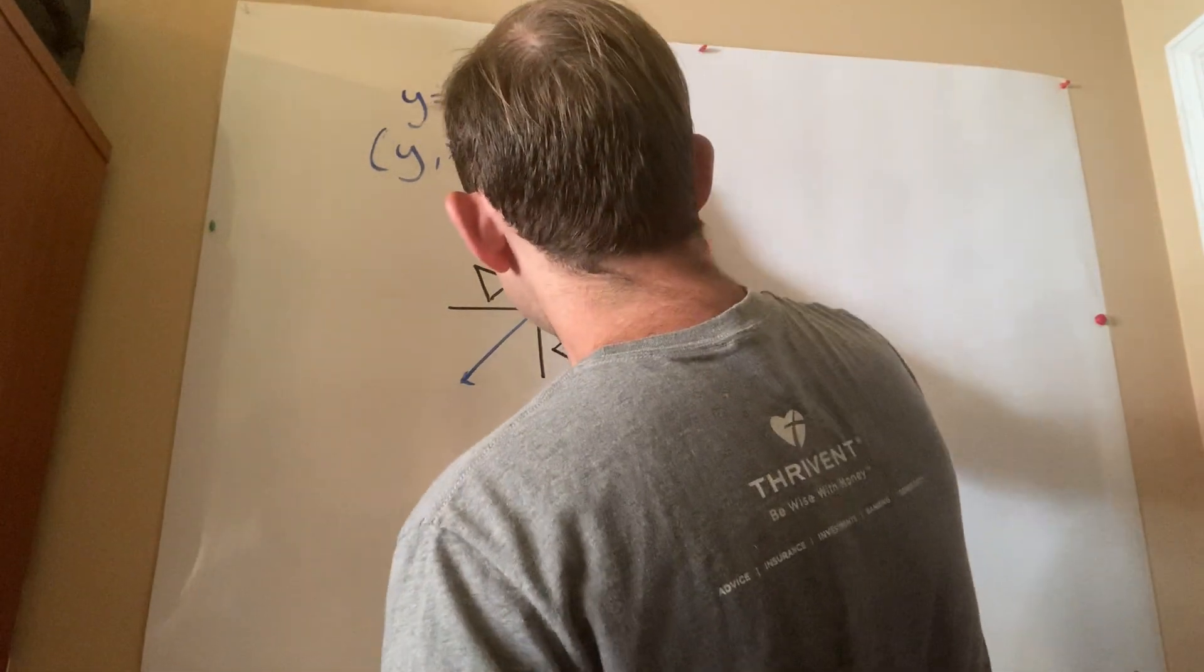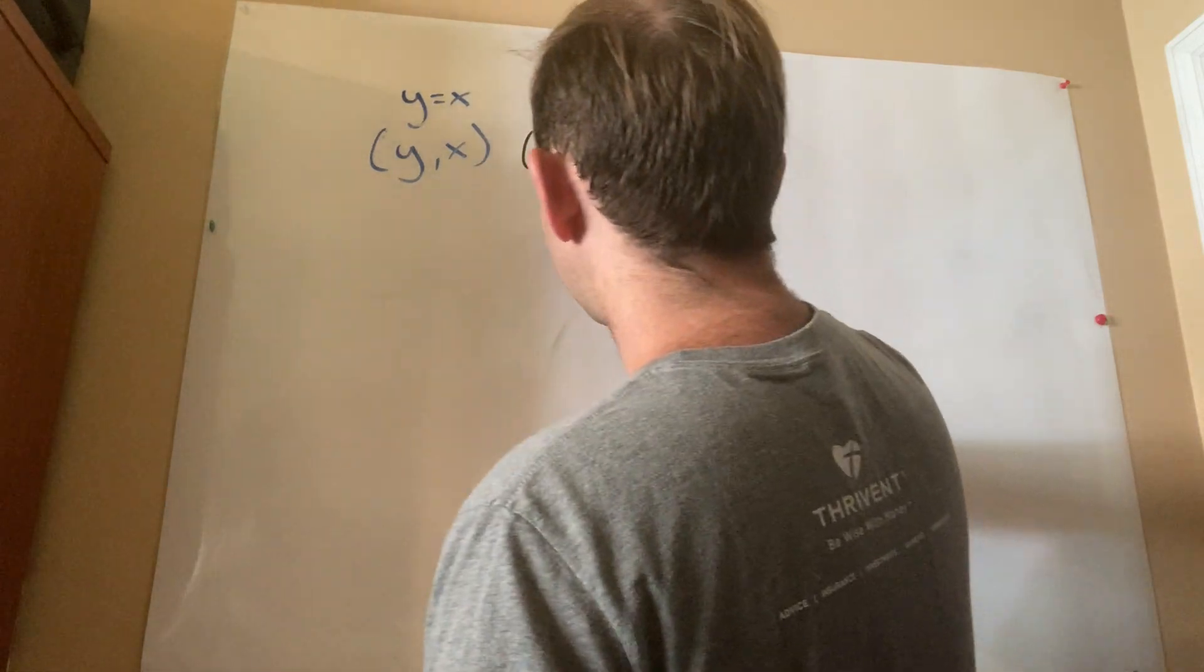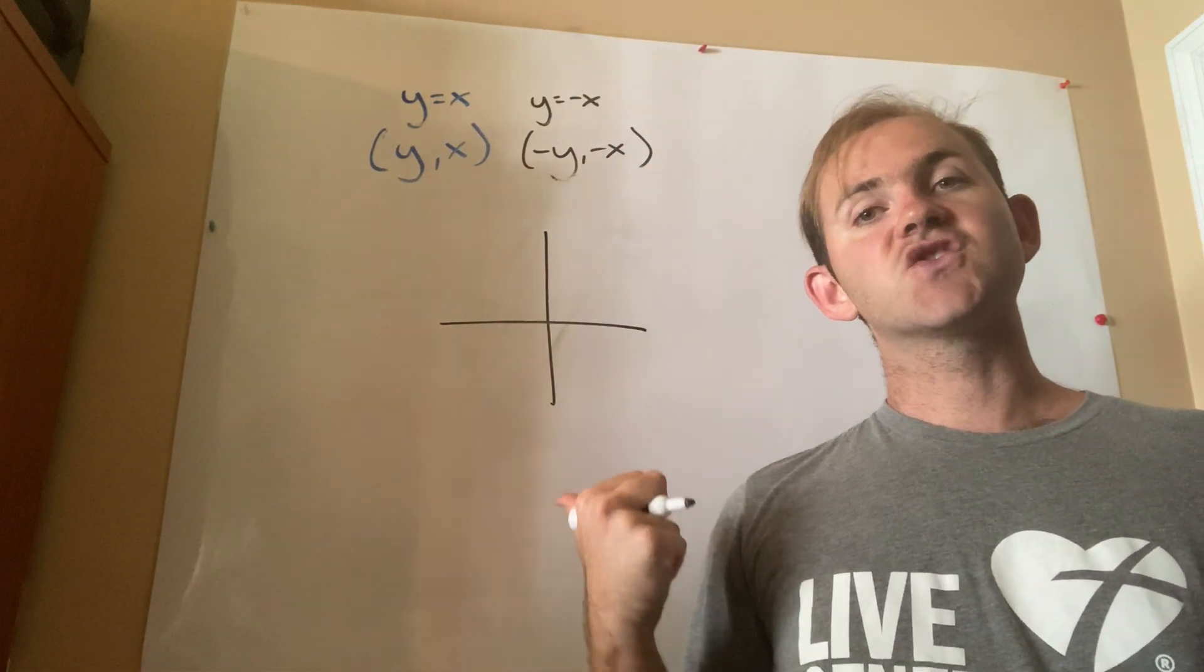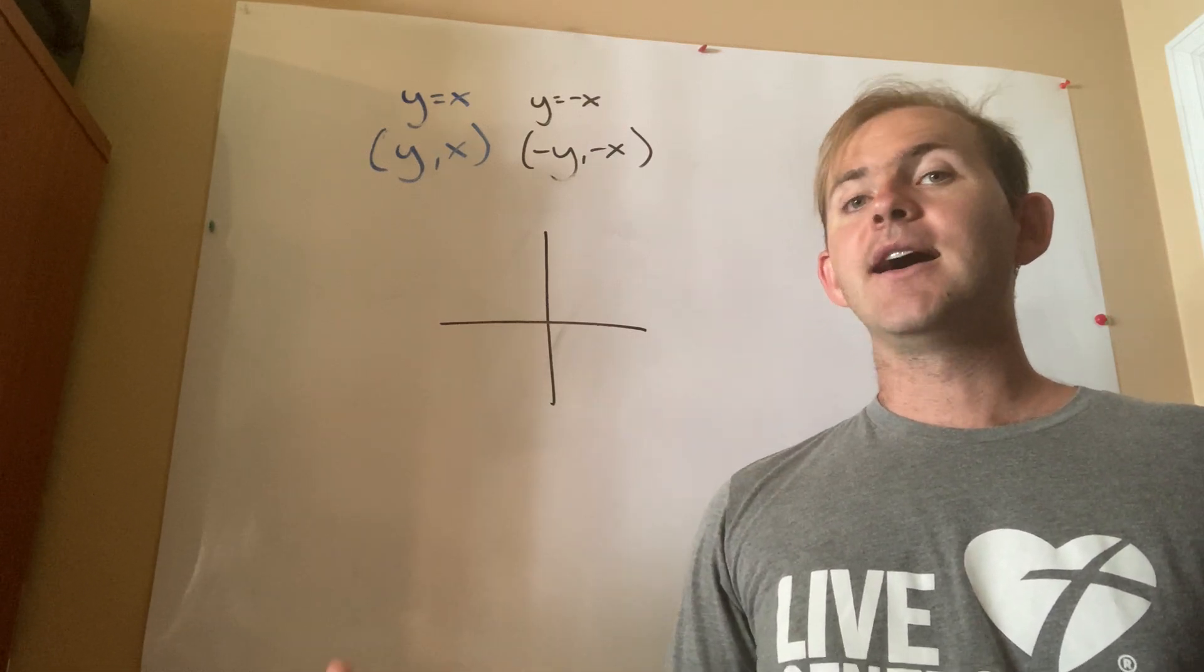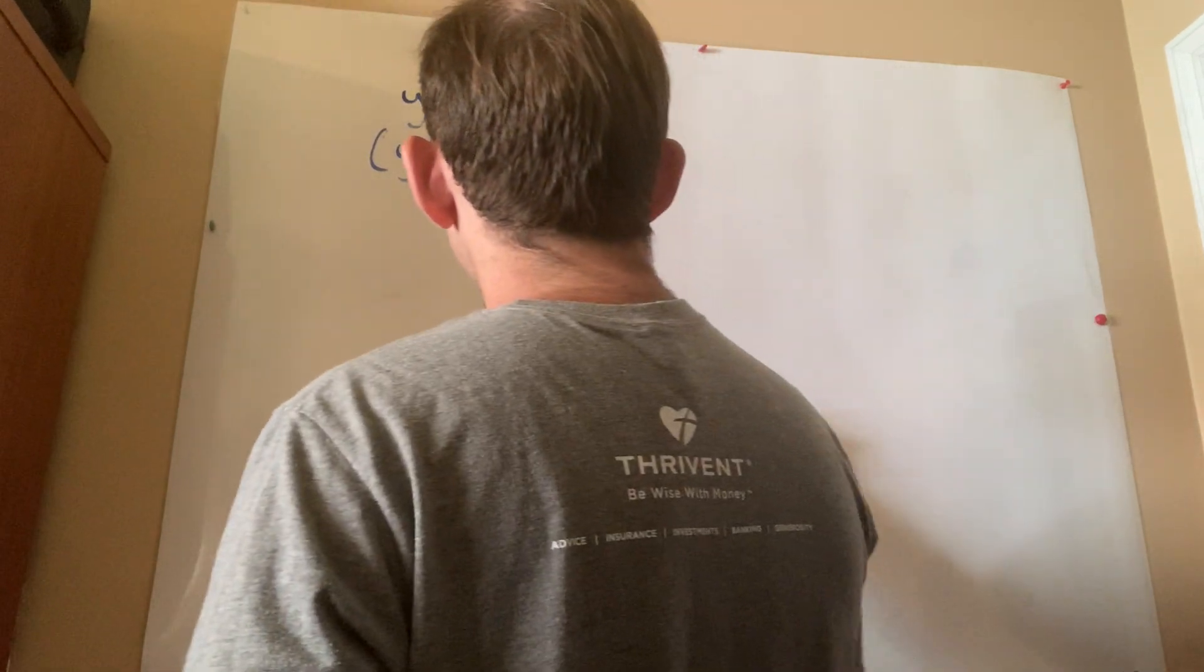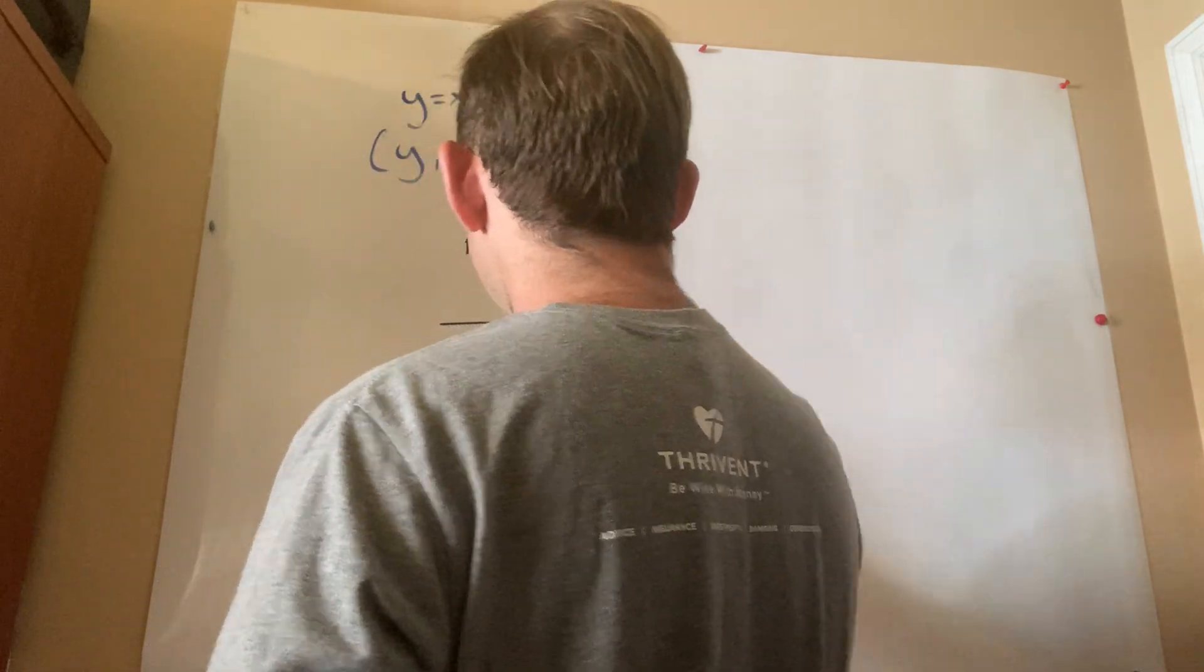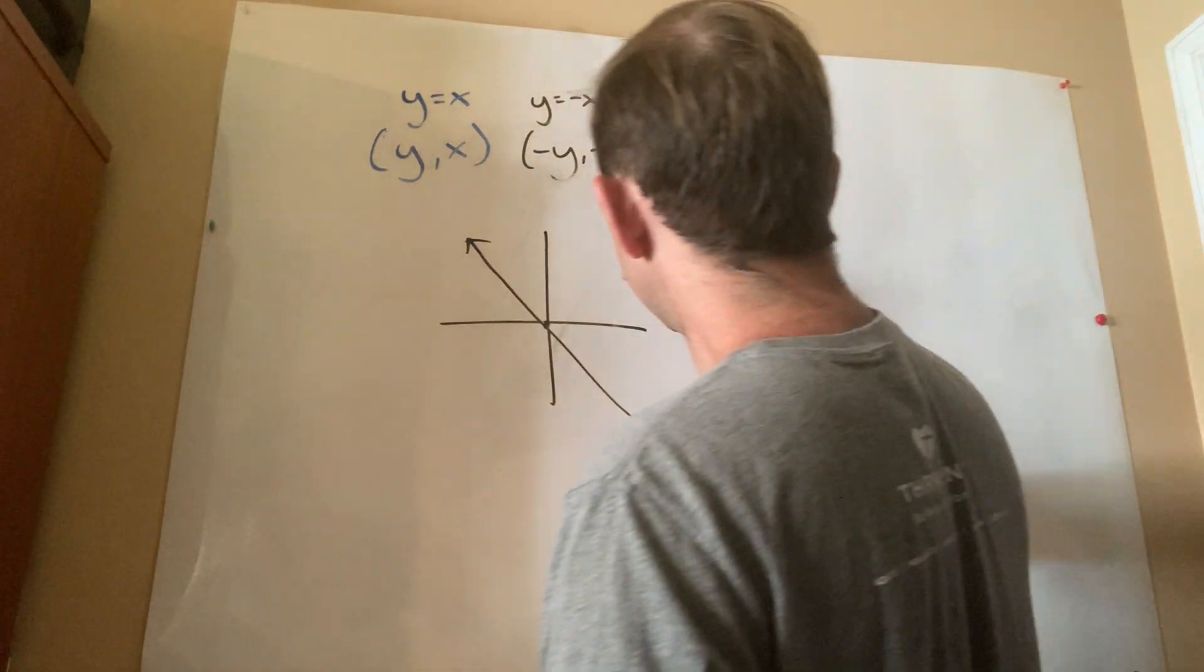The same goes for a reflection over y equals negative x. So y equals negative x from algebra 1, slope-intercept form, it has a slope of negative 1. m is negative 1, and because there's no b, it's just 0. The y-intercept is 0. So that line would look something like this.